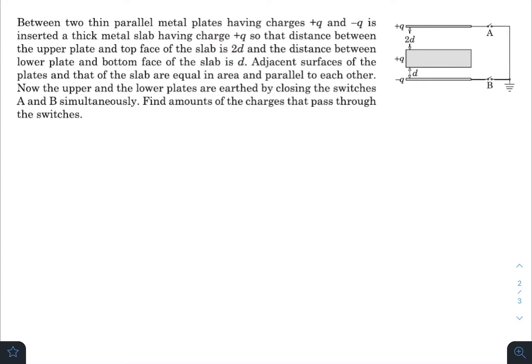What is up everyone, I hope all of you are doing great. In today's question we have between two thin parallel metal plates having charges plus q and minus q is inserted a thick metal slab having a charge plus q. This distance is 2d, this distance is d. Adjacent surfaces of the plates and that of the slab are equal in area, parallel to each other. This is connected by a switch A, this is connected by a switch B to the ground. When A and B switches are closed simultaneously, find the amount of charges that passes through the switches.